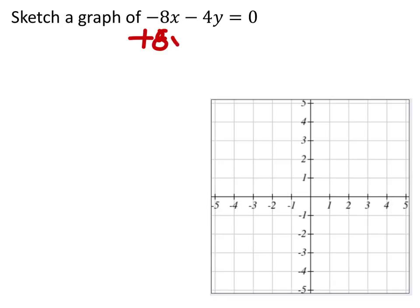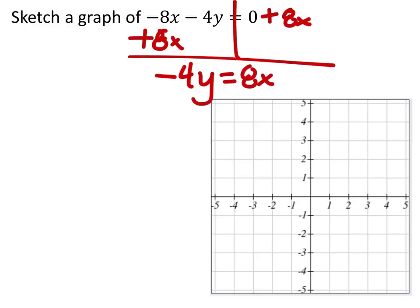So I'm going to add 8x to both sides. And I get negative 4y equals 8x. And divide by negative 4.